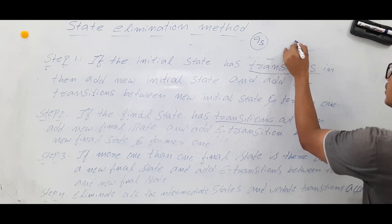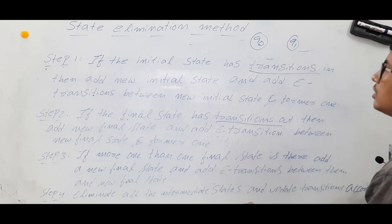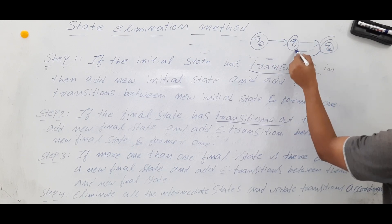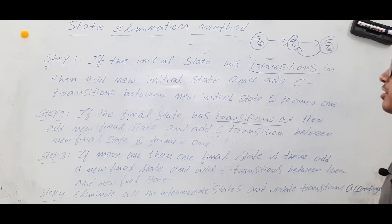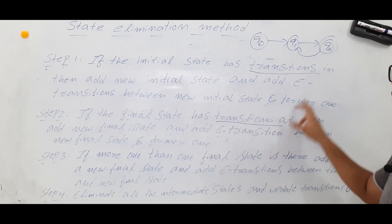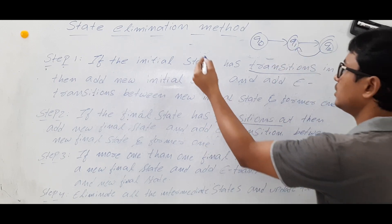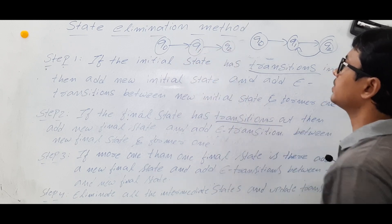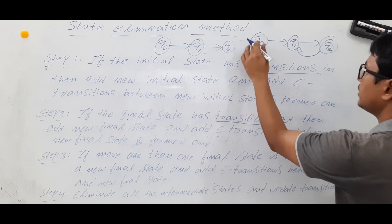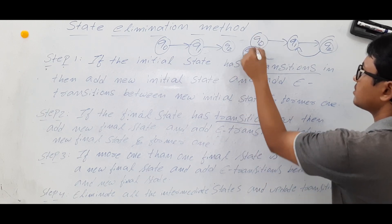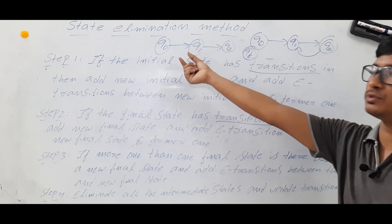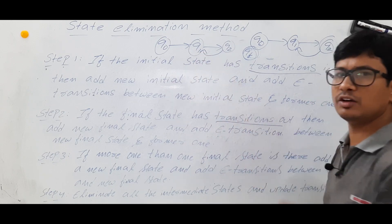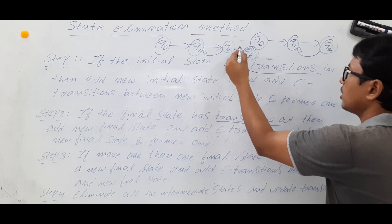Let's take an example with states q0, q1, and q2 where q2 is your final state. If there is an outgoing edge from the final state q2, then you keep q0, q1, q2 the same, and add a new final state called qf. Make it the final state. Keep the same transitions — I am not changing anything — just add a new final state.